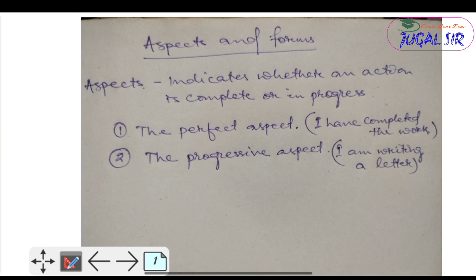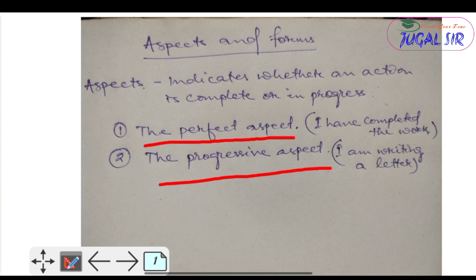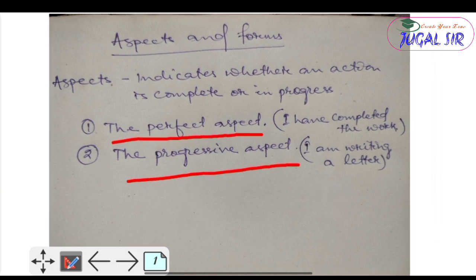Look at here — there are two aspects in tense. The first one is the perfect aspect and the second one is the progressive aspect. For example: 'I have completed the work' — this means the work has already been completed. And 'I am writing a letter' — the action is going on right now.